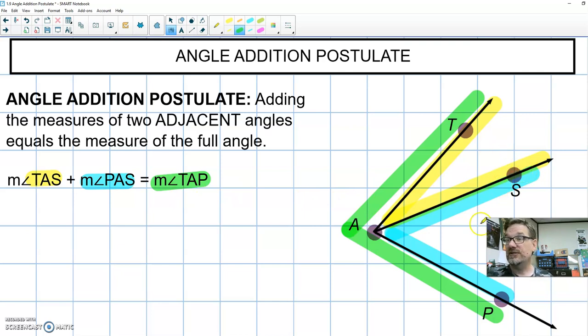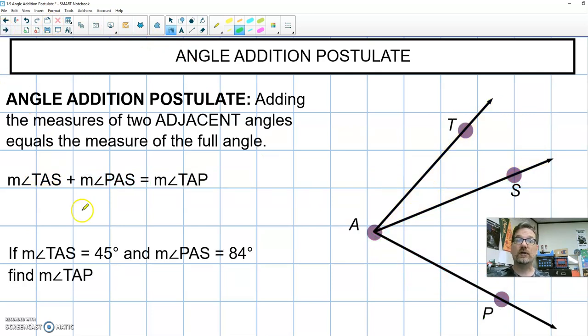Makes sense. Add the two inside pieces and I get the entire length. That is the angle addition postulate. Let's see how that's going to work.